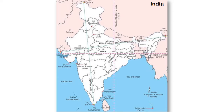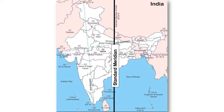The Republic of India uses only one time zone across the whole nation and all its union territories, called Indian Standard Time, also called the Standard Meridian of India. This is the time zone observed throughout India.